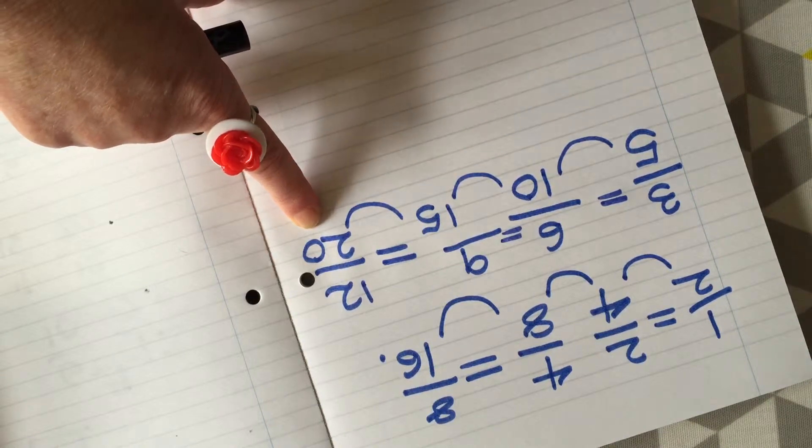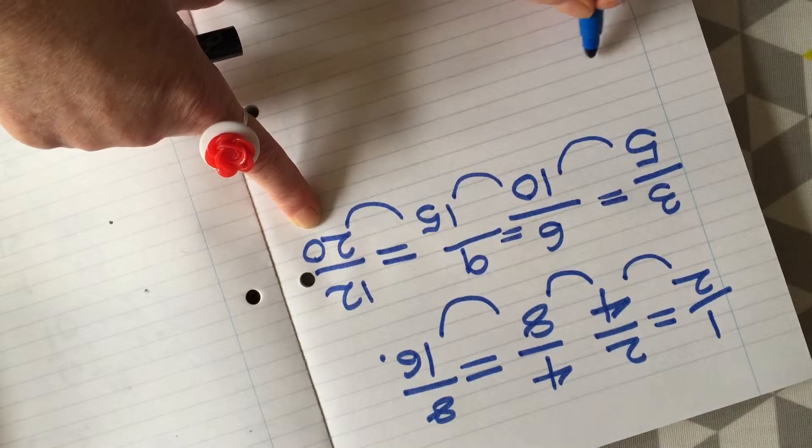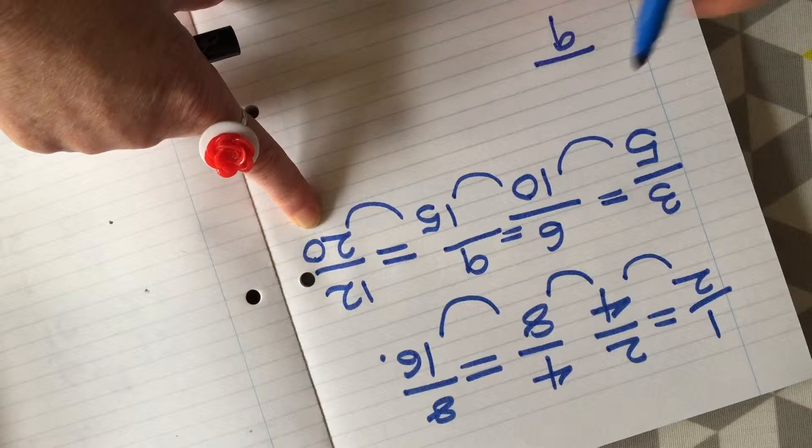Should we do one more random one? Okay, let's start with the bottom number nine and a seven.